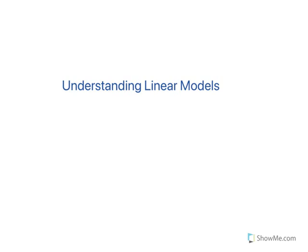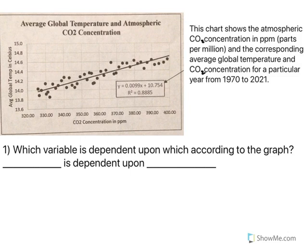Understanding linear models, and we're going to use a specific example talking about global temperatures and atmospheric CO2 concentration. This chart shows the atmospheric CO2 concentration in ppm — that's parts per million — and the corresponding average global temperature and CO2 concentration for a particular year from 1970 to 2021.